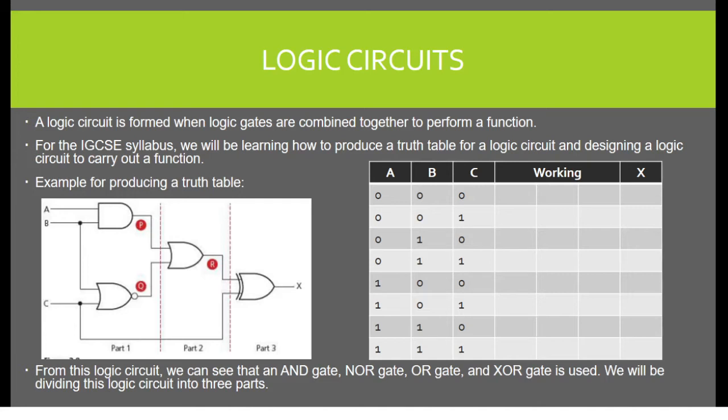Example for producing a truth table. From this logic circuit, we can see that an AND gate, NOR gate, OR gate, and XOR gate is used. We will be dividing this logic circuit into three parts. You will also be given a table, such as the one on the right, with the values A, B, and C provided.